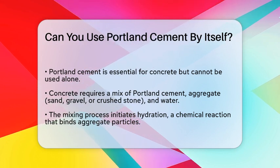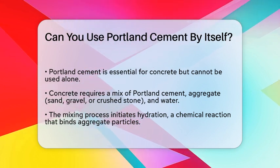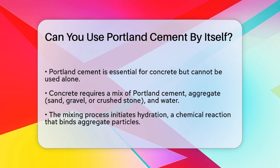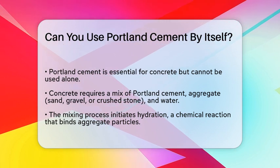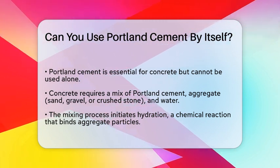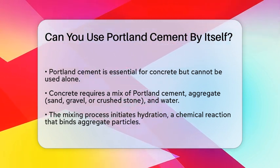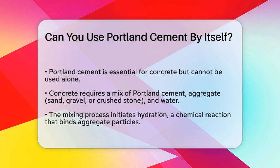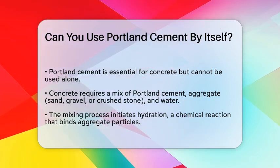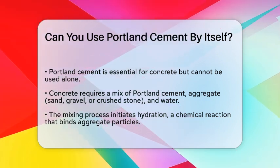To create concrete, you need to mix Portland cement with other ingredients like aggregate, such as sand, gravel or crushed stone, water, and sometimes additional materials like admixtures or supplementary cementitious materials.